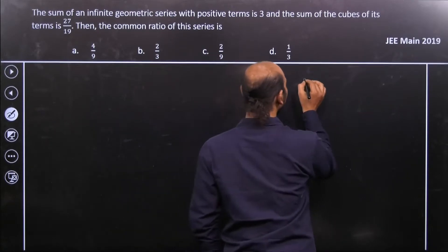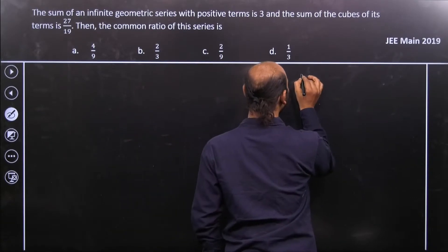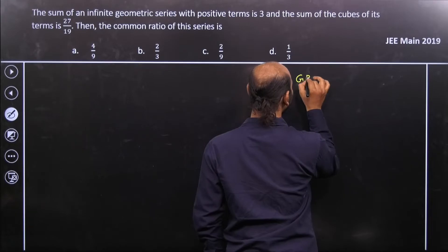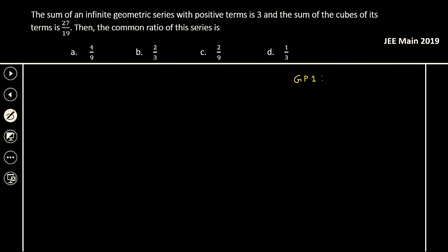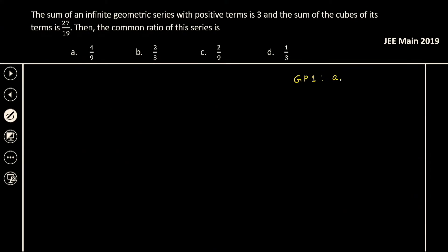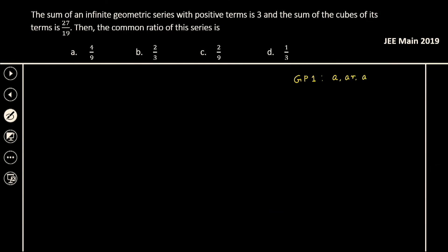Let us first consider GP series 1, which will have all the terms. That gives you: A, A·R, A·R² and so on.